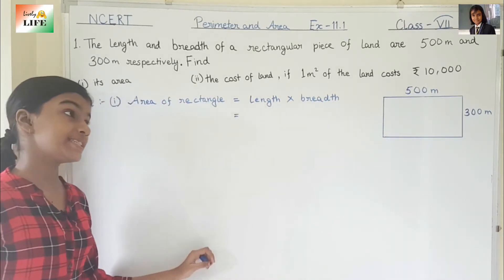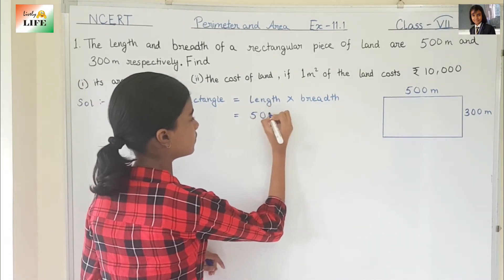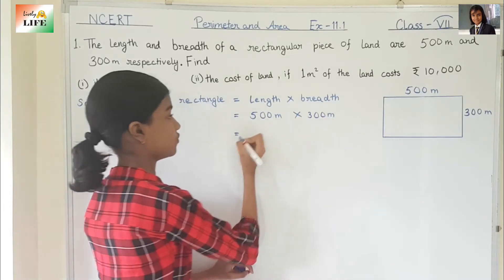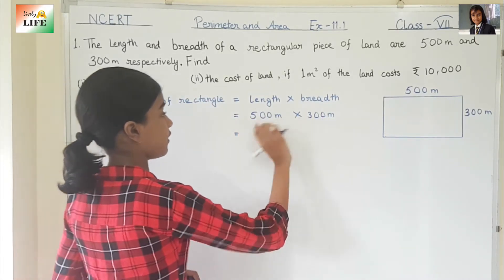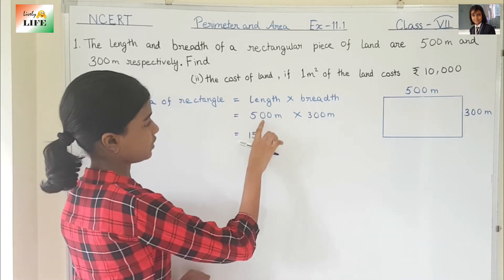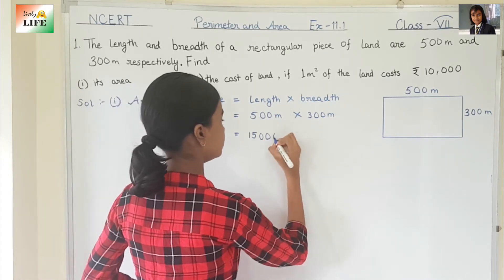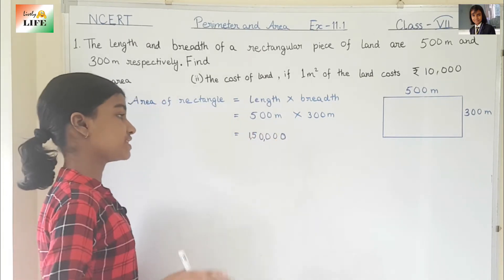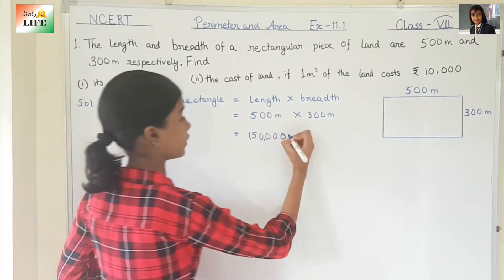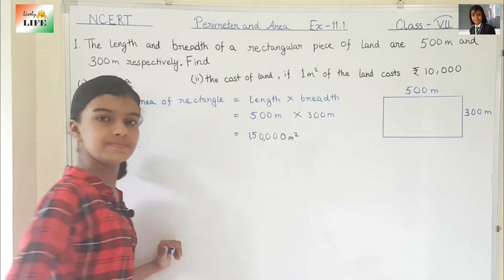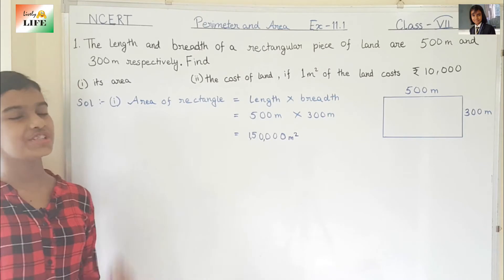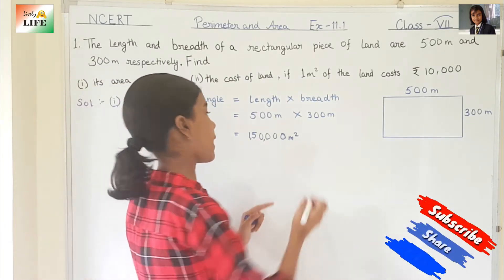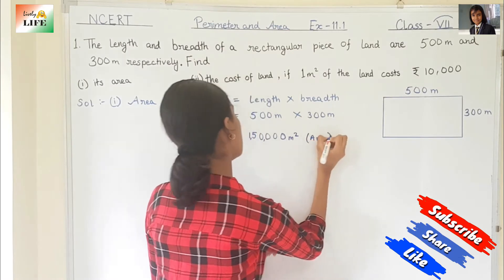Now, what is the length? It is 500 meters. So, 500 meters into 300 meters. Five threes are 15, then the number of zeros — here there are 2 and here also 2, so the answer is 1,500,000. The unit of area is meter square, not just meter — because meter into meter is meter square. So the area of this rectangular plot is 1,500,000 meter square.